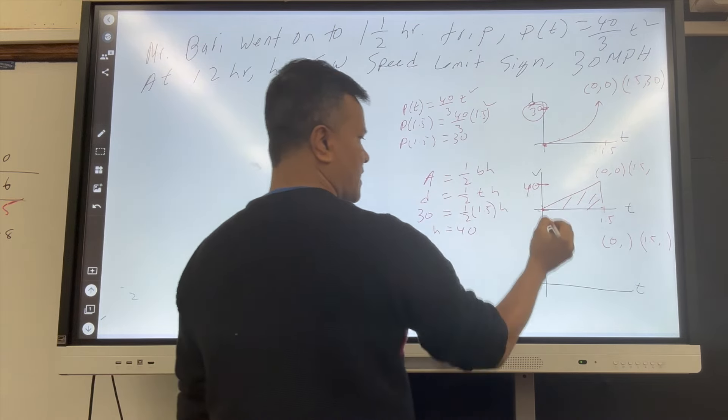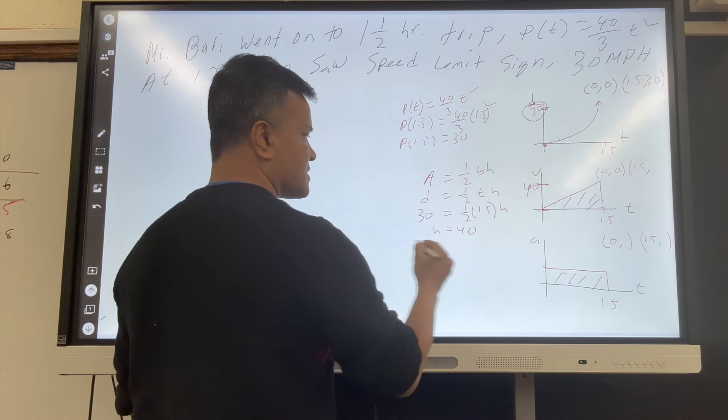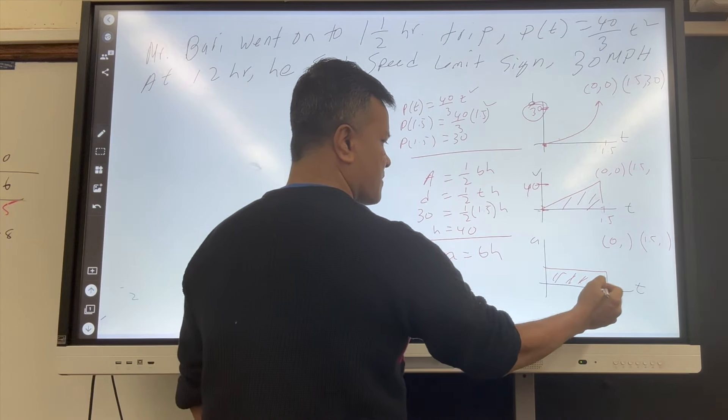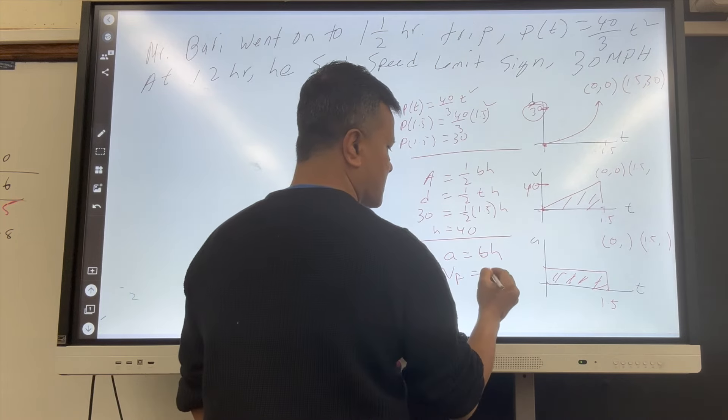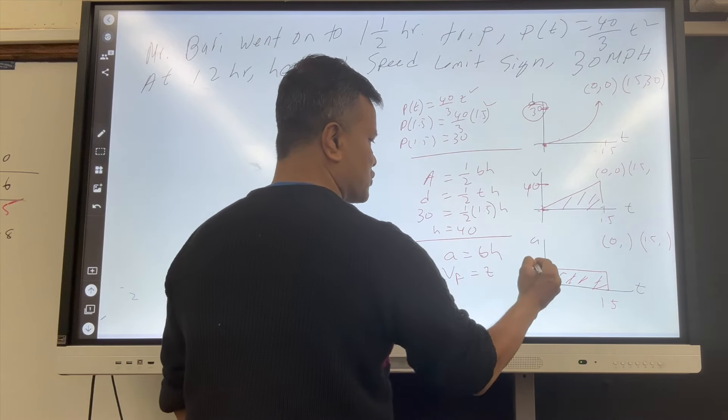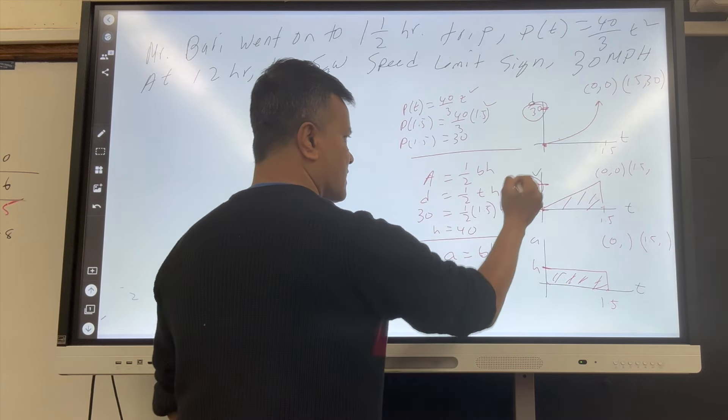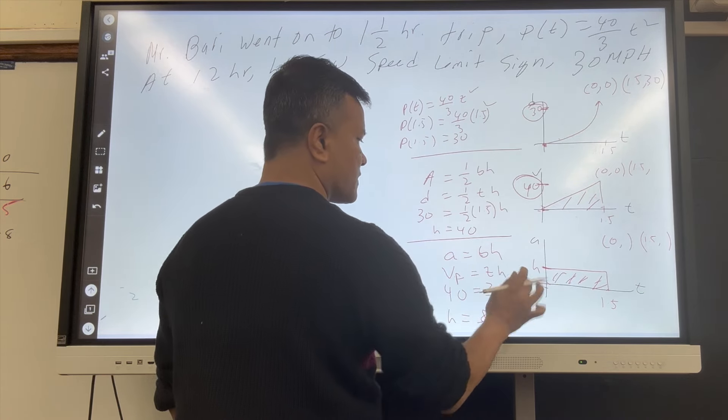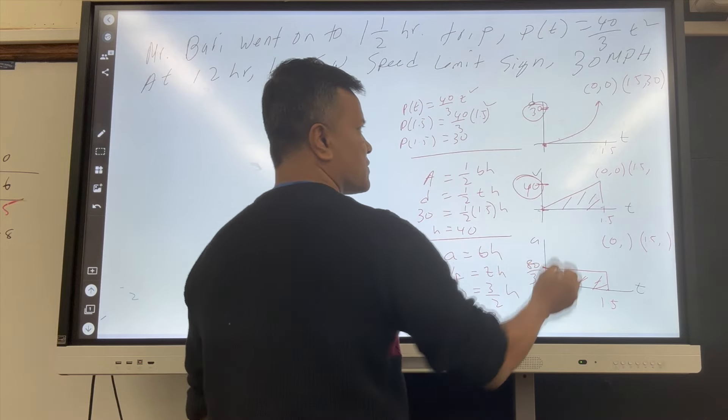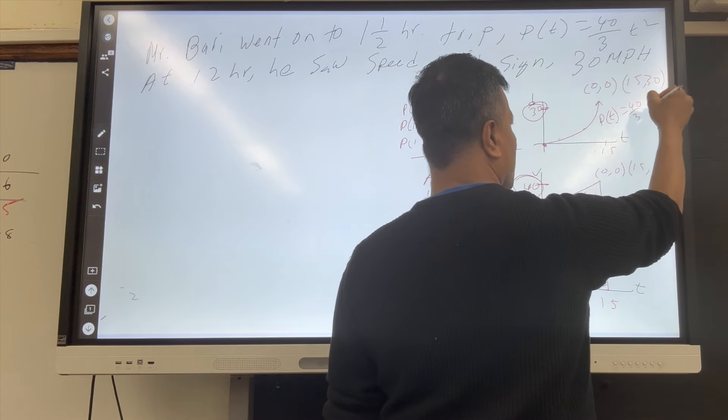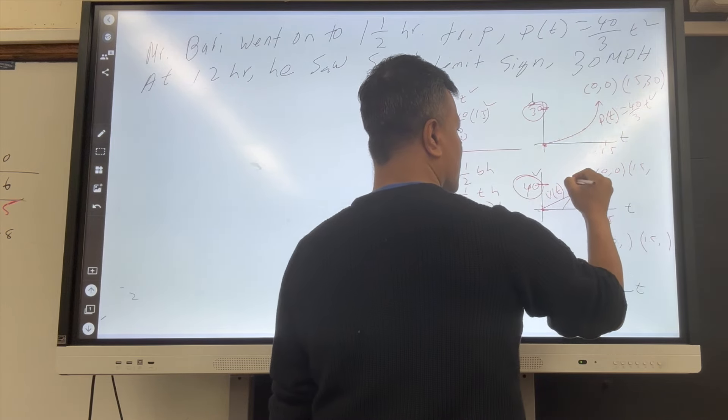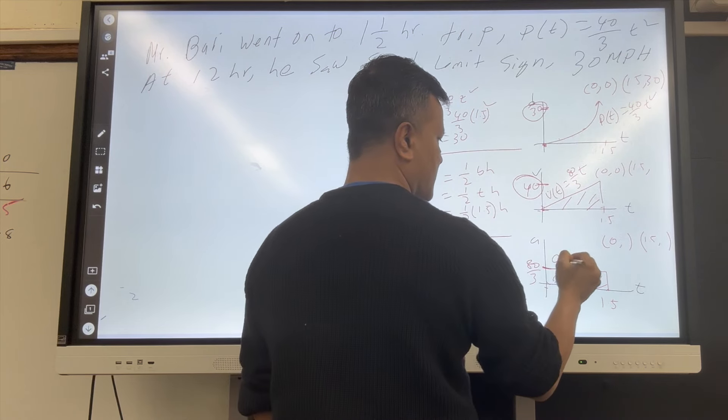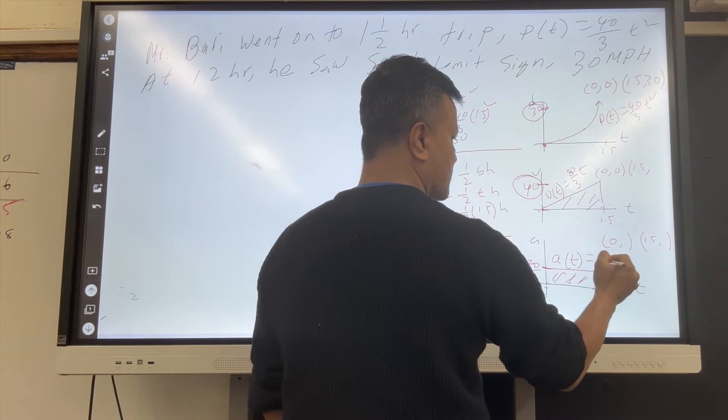If this is diagonal, this must be horizontal. This is 1.5. In this time, area is BH. Area has a name, velocity final. B has a name, time, and acceleration has a name, H. Velocity final is 40. T is 3 over 2, H. So H is 80 over 3. So this equation is P of T equals 40 over 3 T squared. This equation is V of T equals 80 over 3 T. This equation is A of T equals 80 over 3.